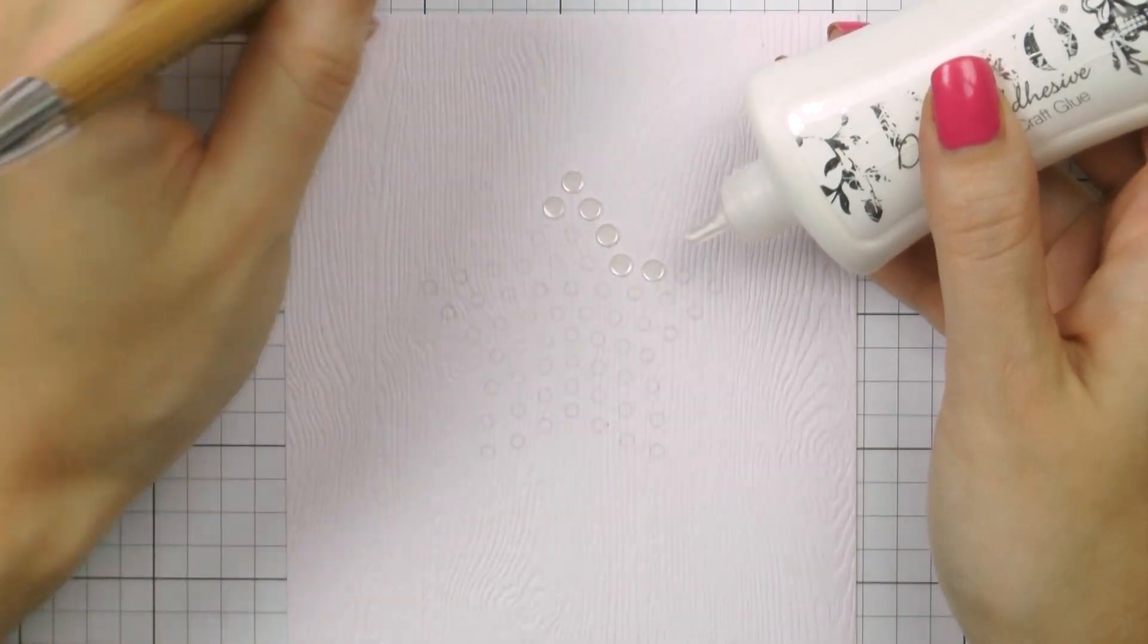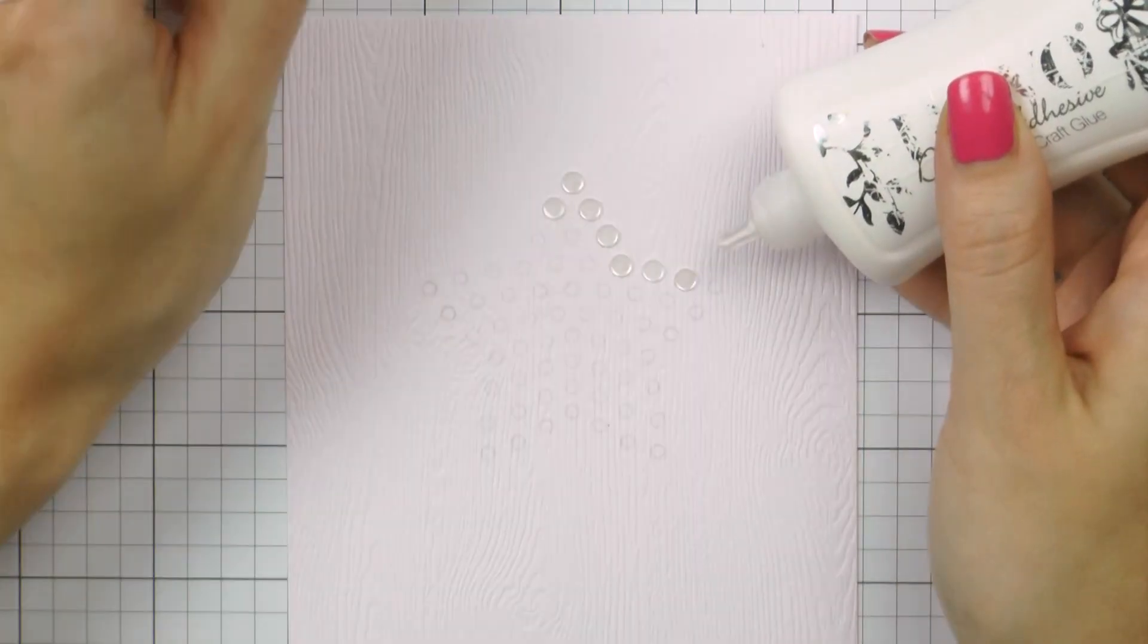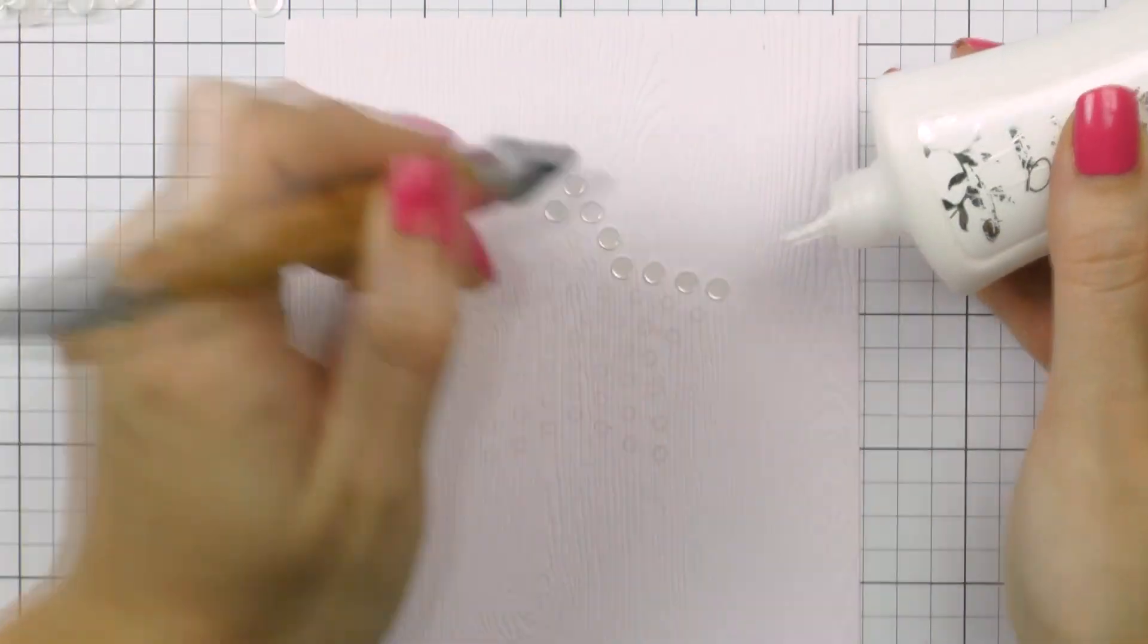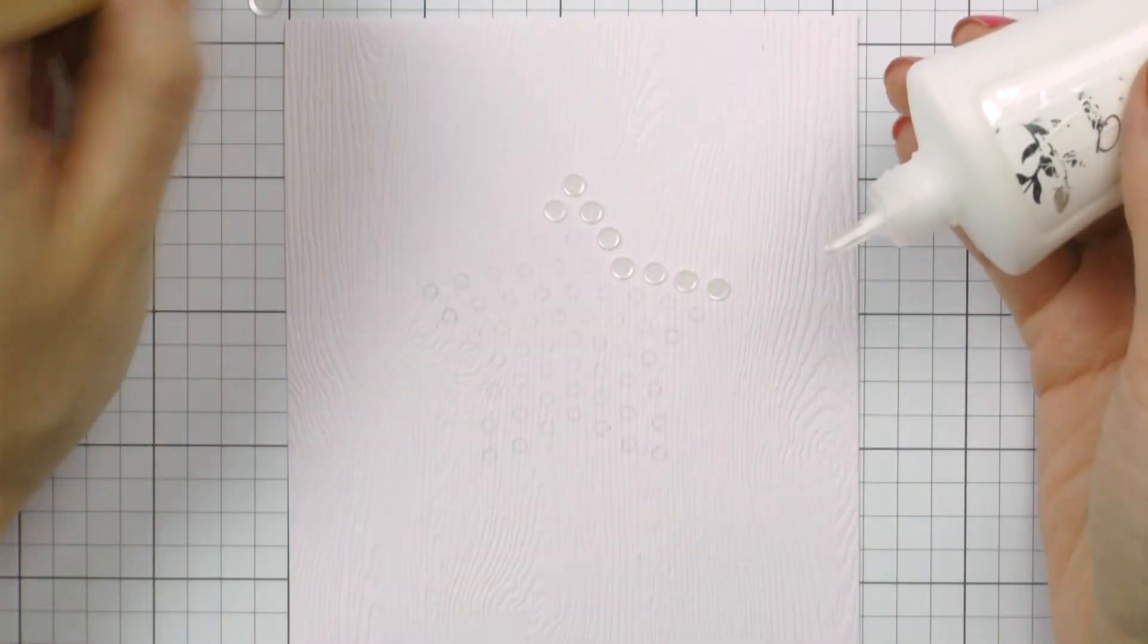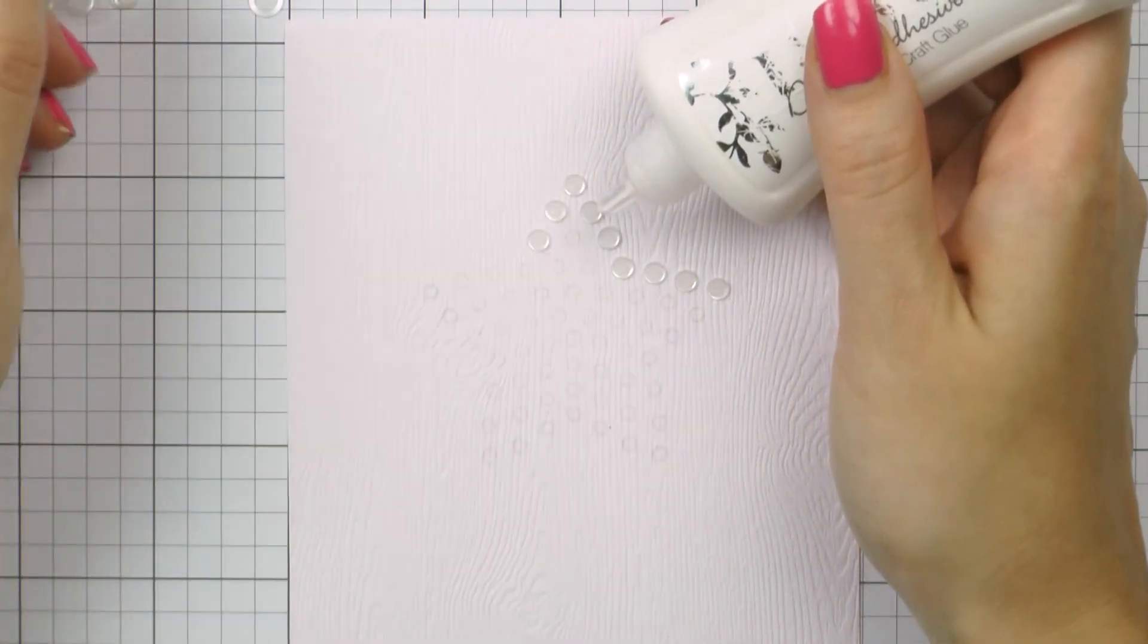I'm also going to use glue, this is deluxe adhesive from Tonic Studios. Any strong glue will work for this and it's always best to use glue that dries matte in case it oozes out from the sequins so it won't shine on the card.